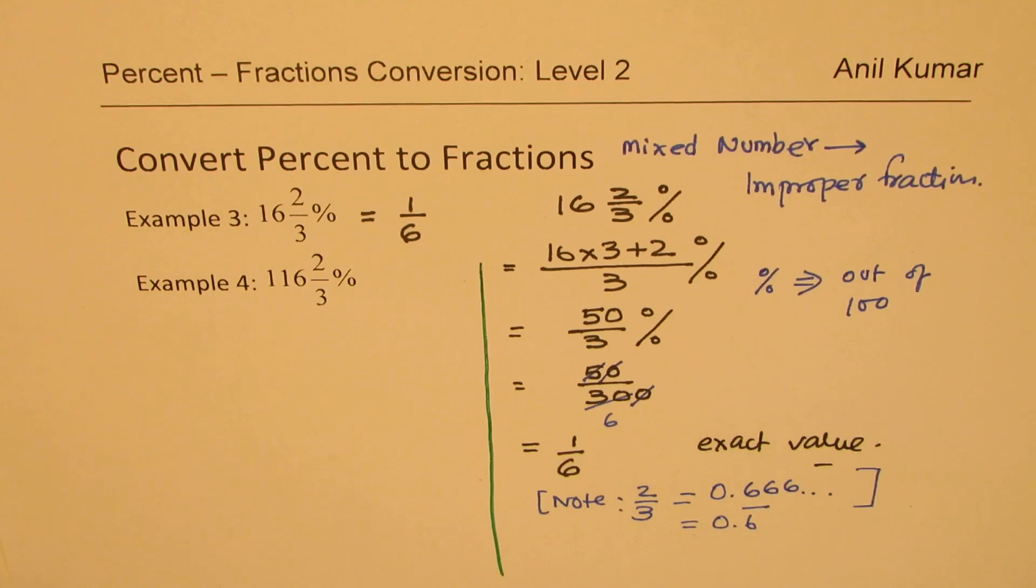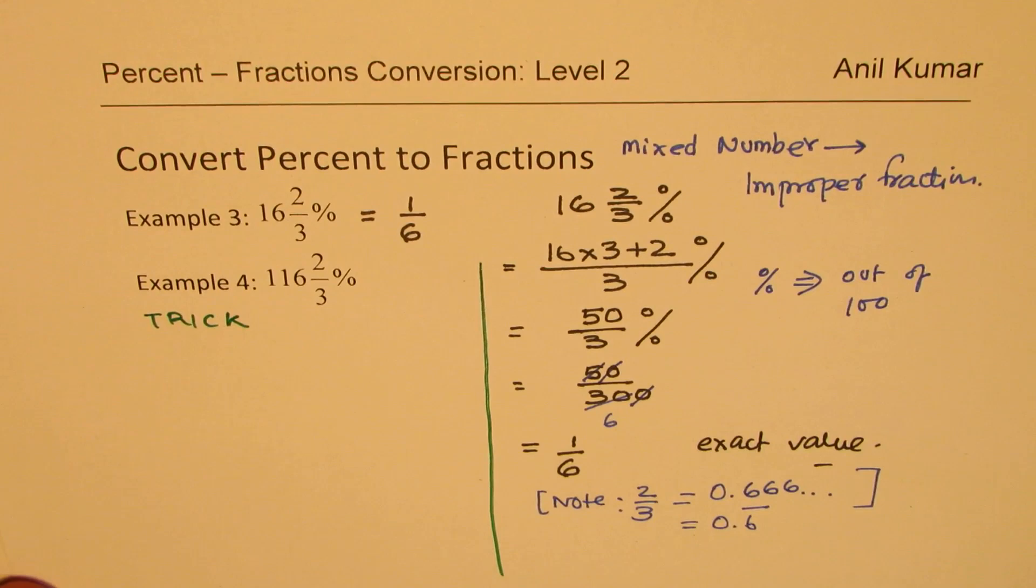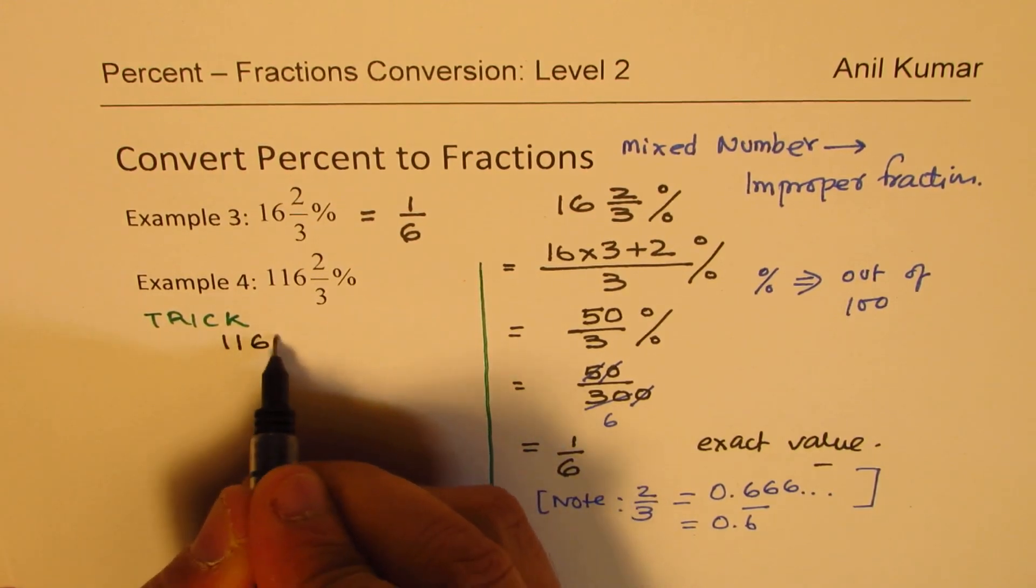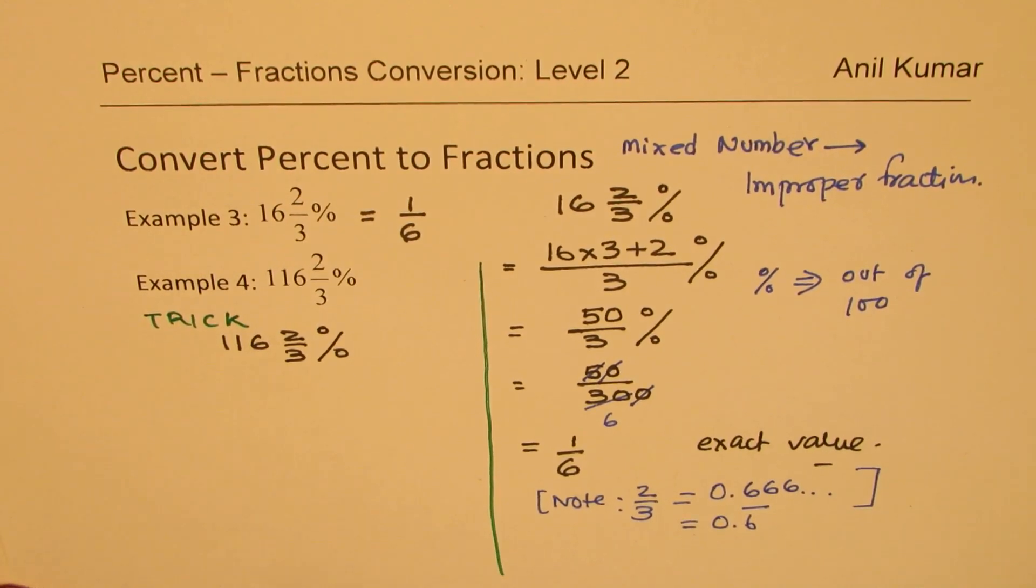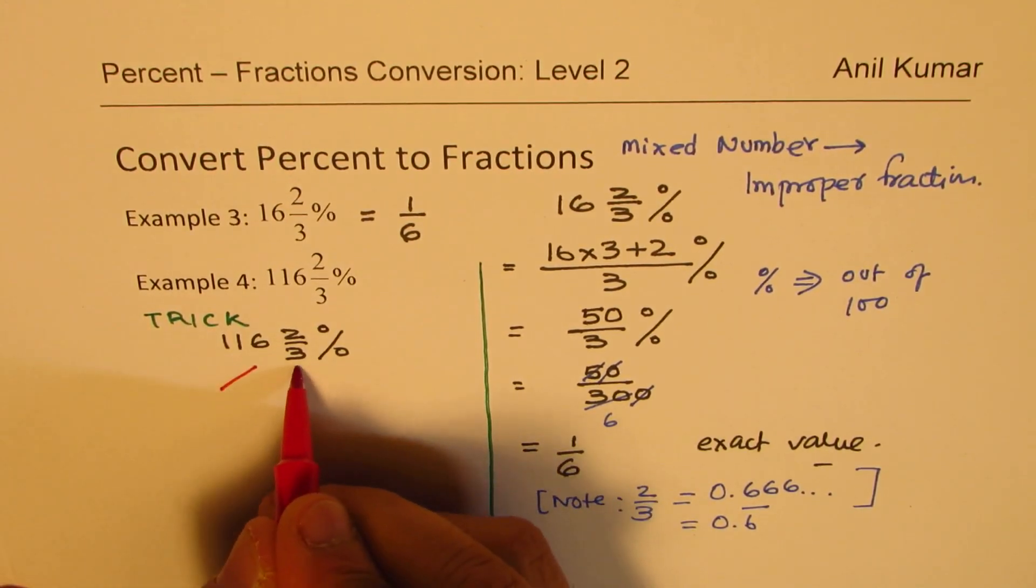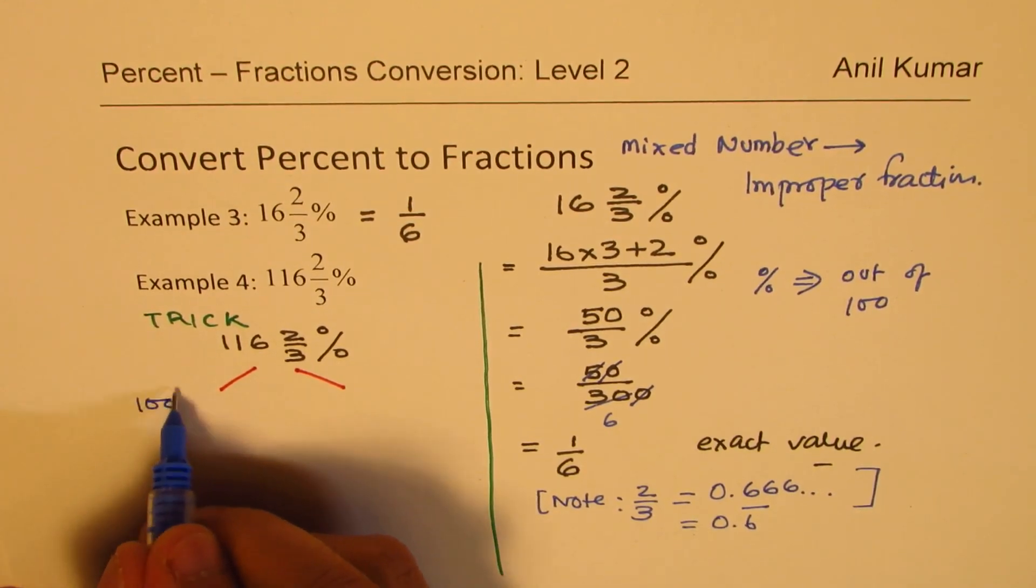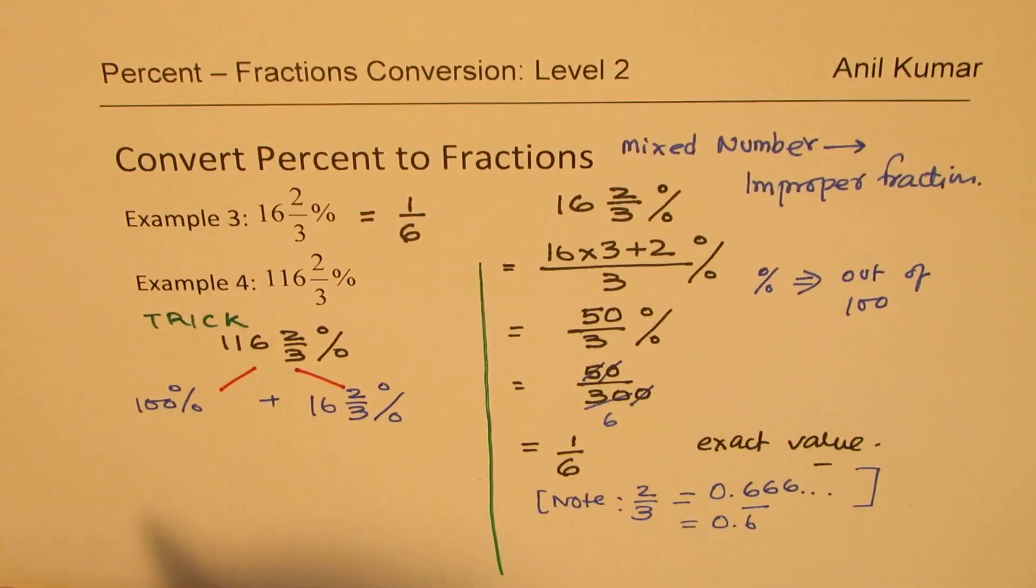Now here is another trick which I am going to share with you. So the trick here is, let's look into the number 116 2/3. So we are now looking into 116 2/3 percent. Now that really means we have two things here. One is 100 percent. So we have 100 percent plus we have 16 2/3 percent.